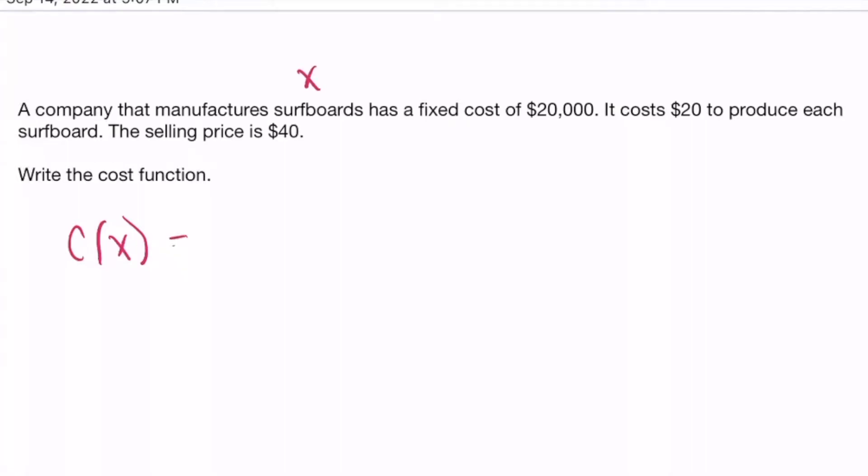So they have a fixed cost and a startup cost of $20,000. So that will always incur when they are starting up. And then to produce each surfboard, it costs $20. So $20 per surfboard that they make. So that's the cost function.